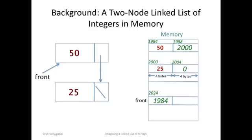Here's a linked list containing two integers 50 and 25 and its memory representation. Let's go over the memory representation in order of traversal through the linked list starting with front.